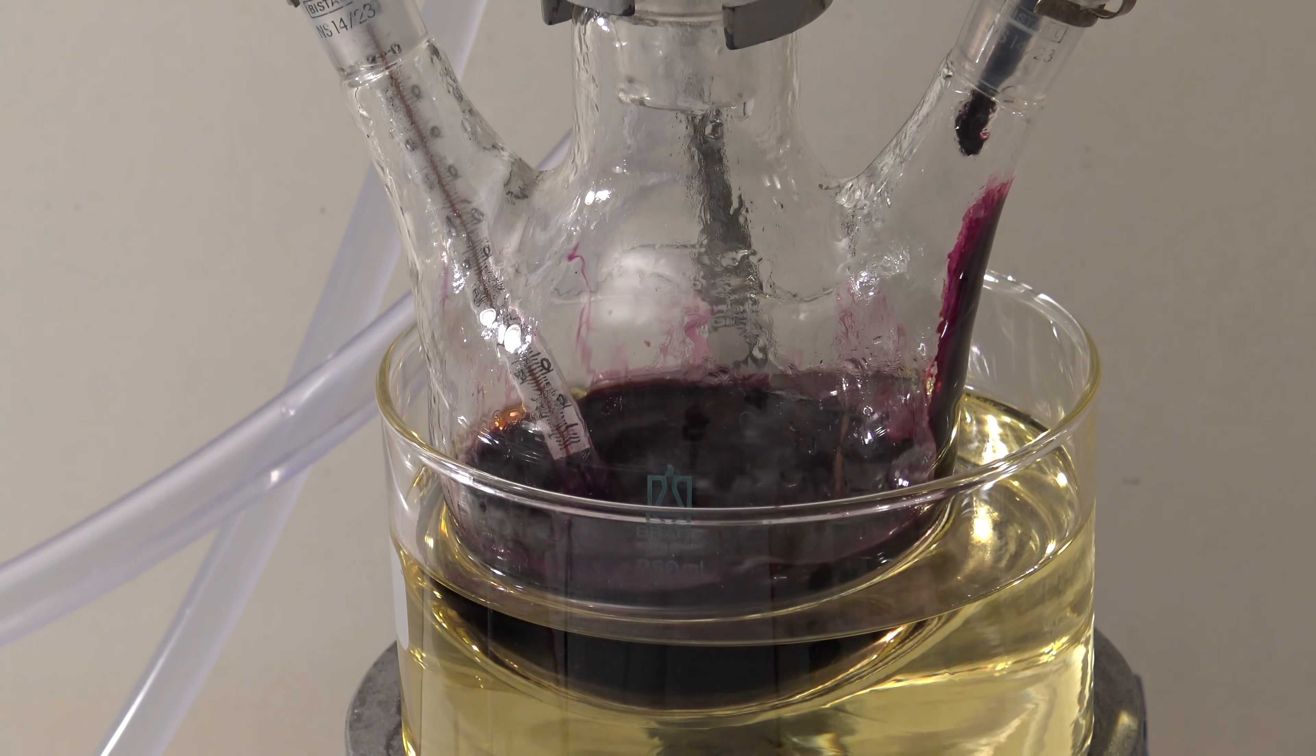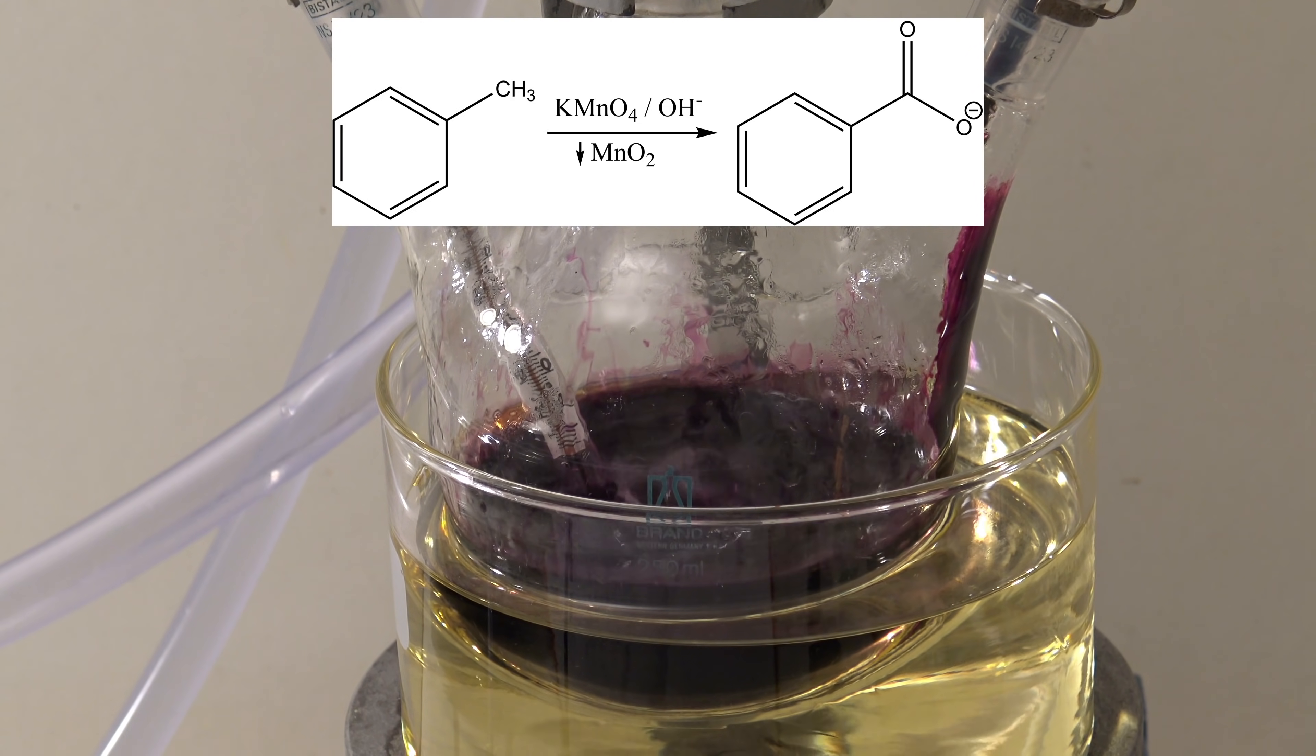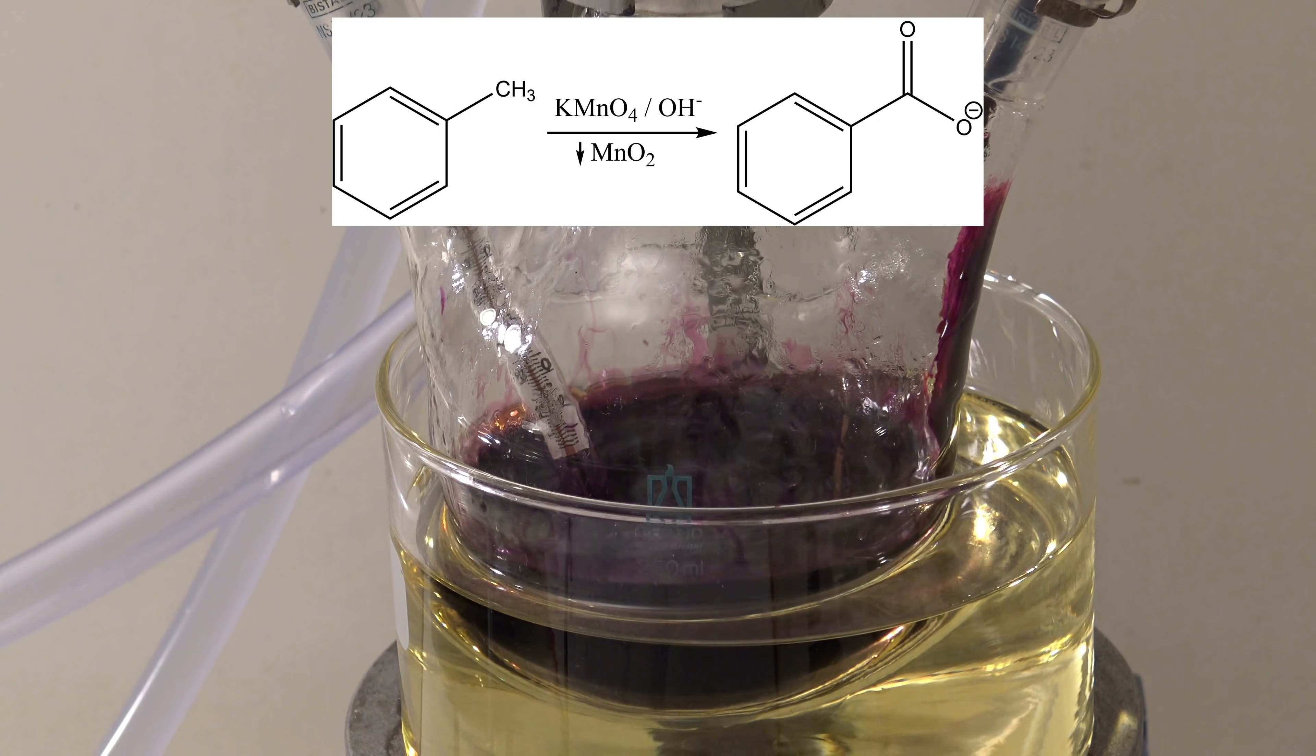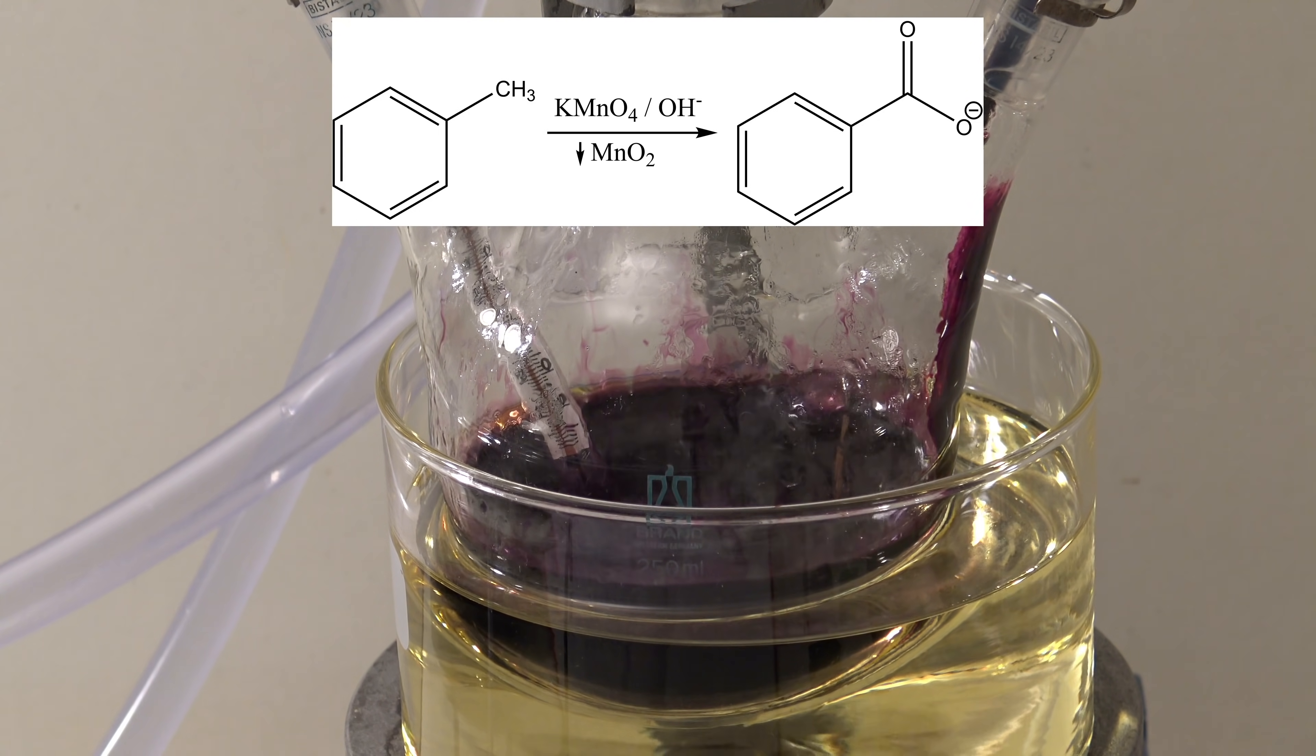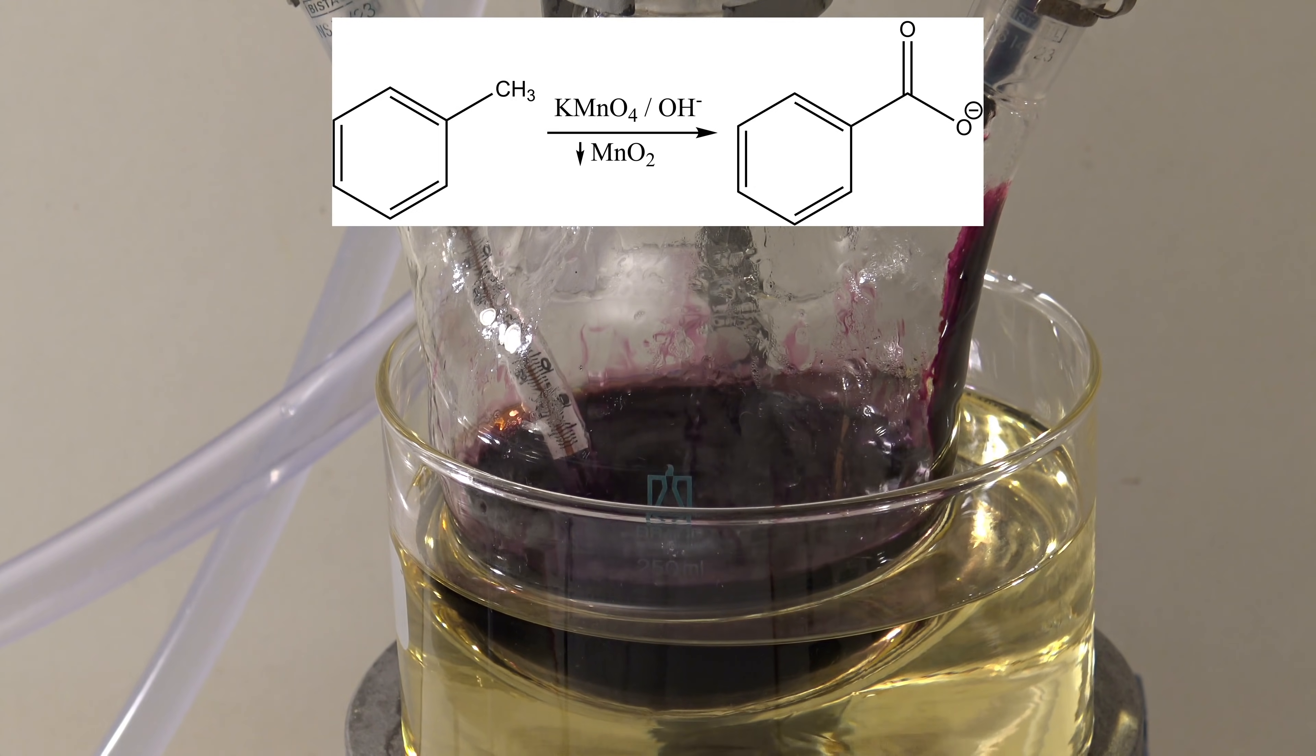The following reaction takes place. The toluene is oxidized by the permanganate to form benzoic acid, which is then deprotonated in the basic solution. A water-soluble salt of the acid is formed. The permanganate is reduced and manganese dioxide is formed.